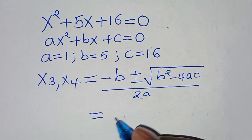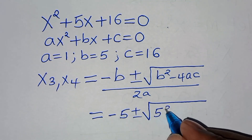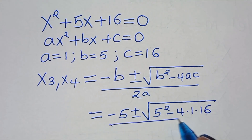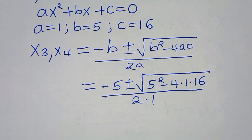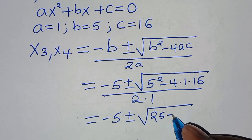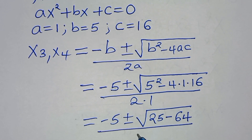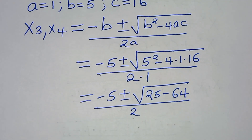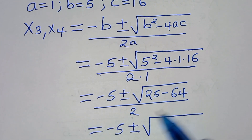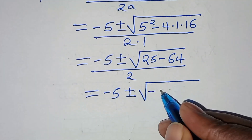Substituting: x = (-5 ± √(25-64)) / 2. We find 25-64 = -39, so x = (-5 ± √(-39)) / 2.